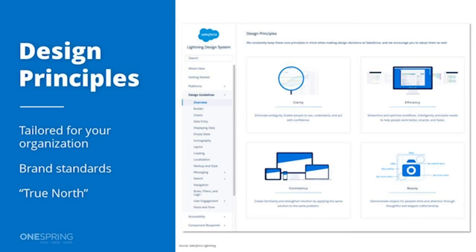Design principles guide you in making decisions about how you're going to create the system, what components to include, and give you parameters around the guidelines you create for those components. You need to tailor and choose the principles that best align to your organization's mission and goals.